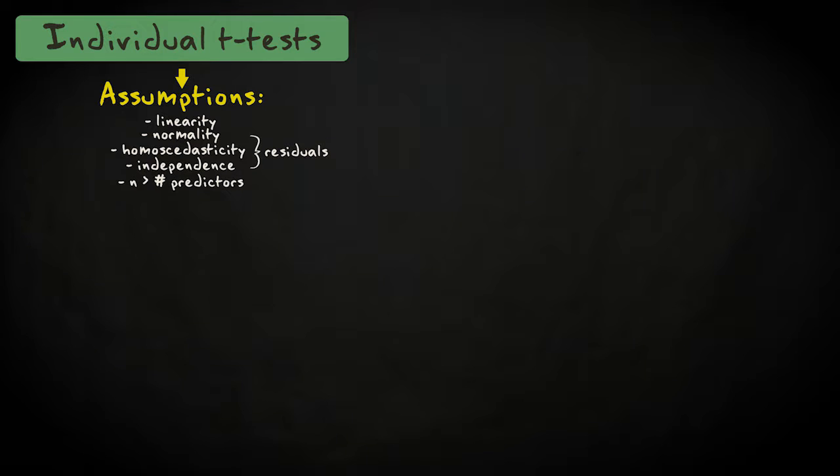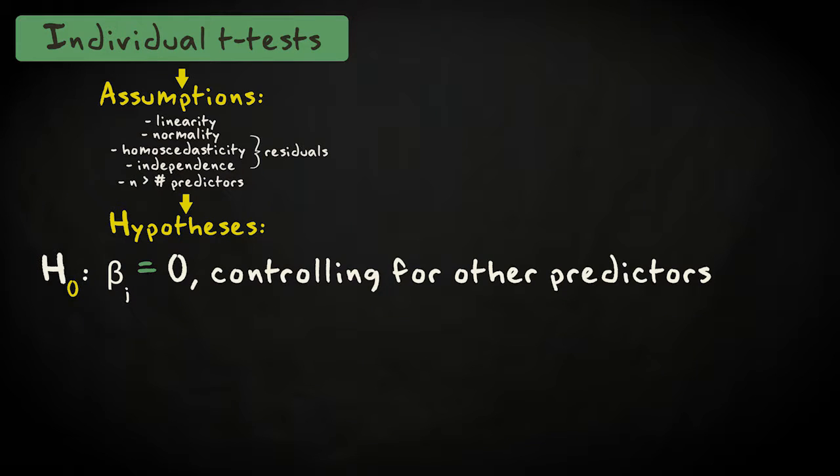So how do we perform these individual tests? Well, the procedure is similar to simple linear regression. The null hypothesis states that, for a particular predictor, the regression coefficient equals zero while controlling for the other predictors.